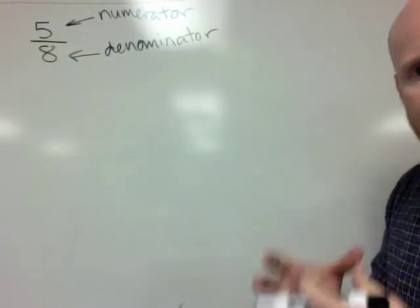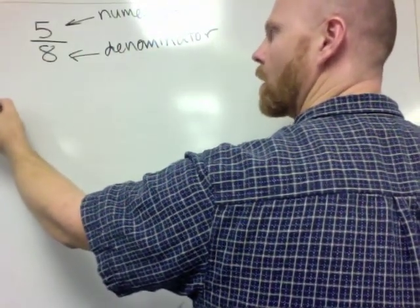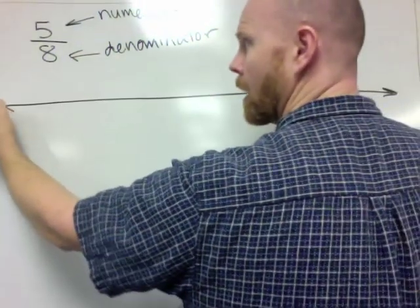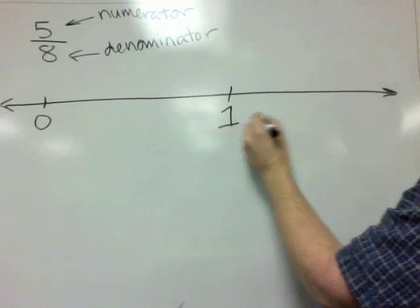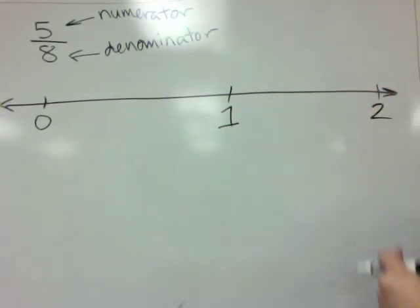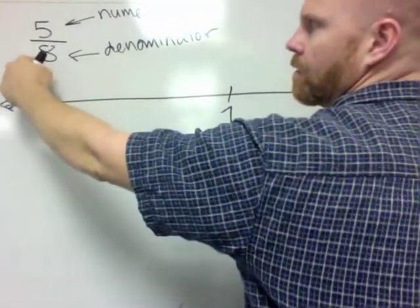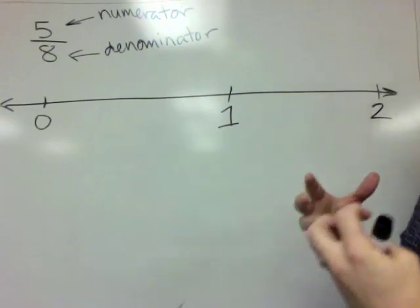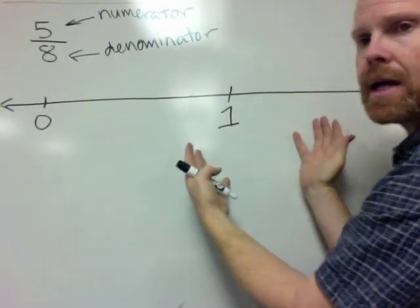Here's what a fraction means. A fraction is a number that lives on a number line. So here's a number line. Let's call this 0, let's call this 1, and way over here let's call this 2. This fraction lives somewhere on this number line.